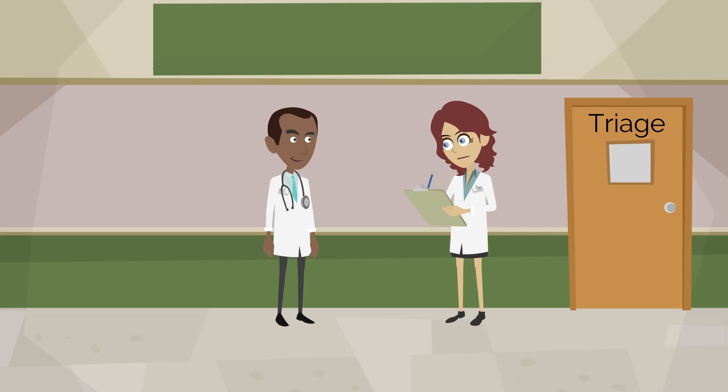Ms. Jones is back in triage. Now, she is 36 weeks and complaining of contractions. Her initial blood pressure was 147 over 95, but the repeat was 138 over 85, and she's not in labor, so I was going to send her home.